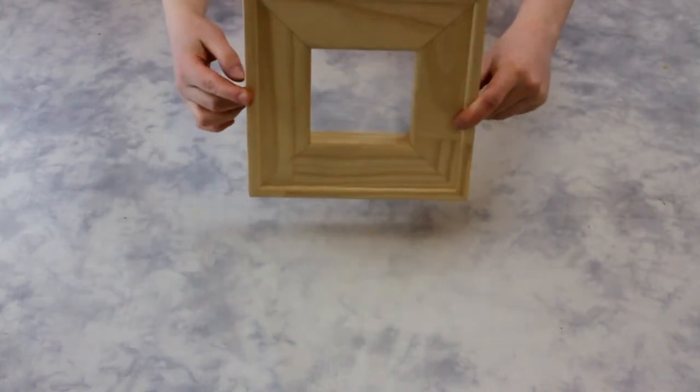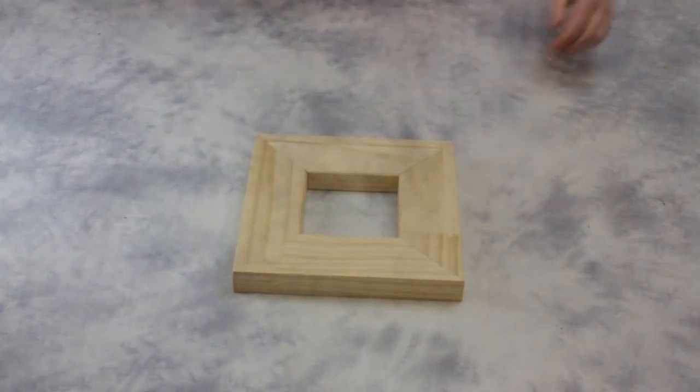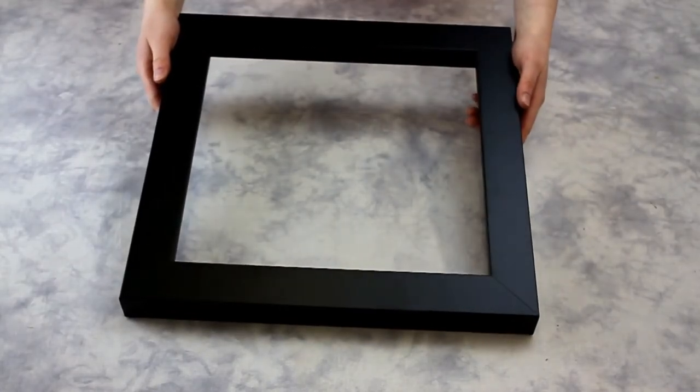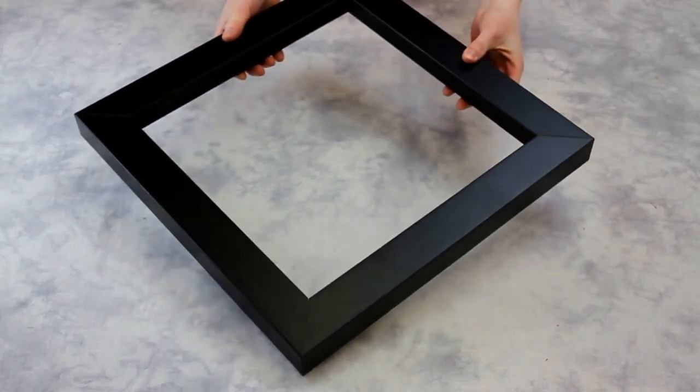As you can see, assembling frames using Hoffman dovetail keys is quite simple and low maintenance. The keys create a tight and seamless joint using very little effort. It is an easy alternative when receiving frame samples or separate moldings for large frames.